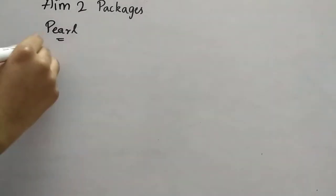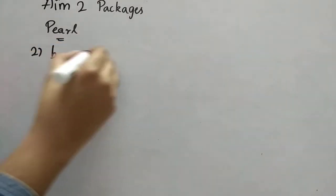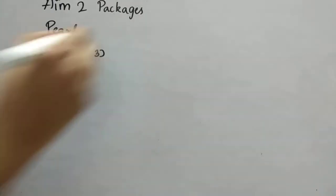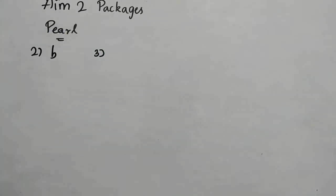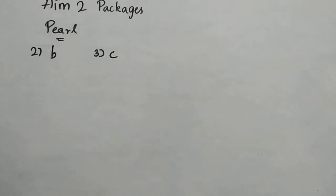Second question: tan 45° + 2 tan² 60° — the answer is option B, which is 7. Third question: sin² 30° + cos² 60° — the answer is option C, which is 1/2.